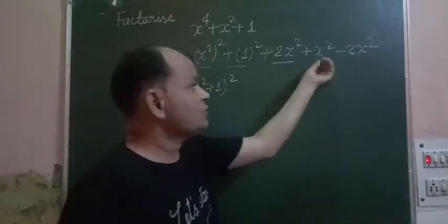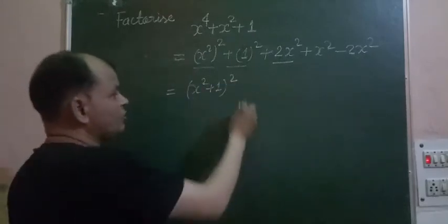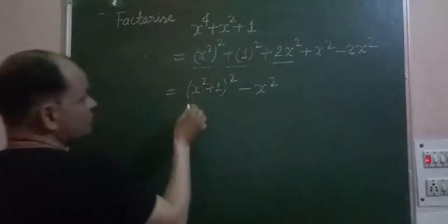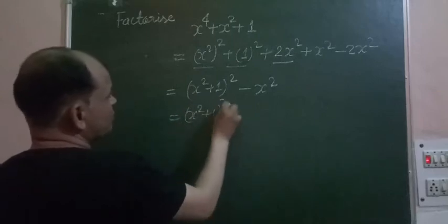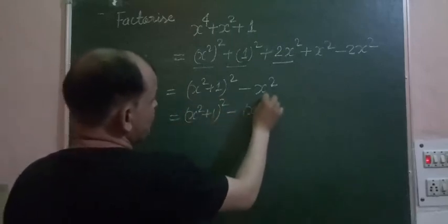Now, x squared minus x squared, so here only x squared remains because this is negative and this is positive. Now we have whole square of x squared plus 1 minus whole square of x.